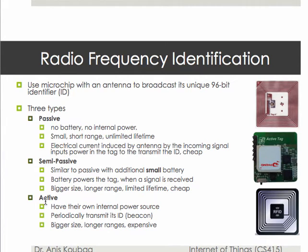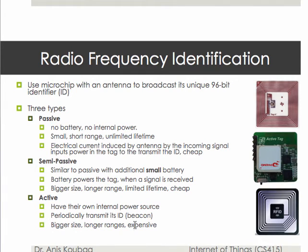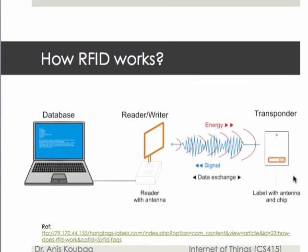The third type is active RFID, which has its own internal power source. The key difference with semi-passive RFID is that active RFID periodically transmits its ID — what we call a beacon — so every certain number of seconds it sends its identifier to be received by a nearby receiver. Active RFID tags are bigger in size, can transmit for longer ranges, but are also more expensive.